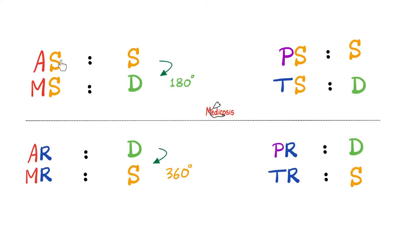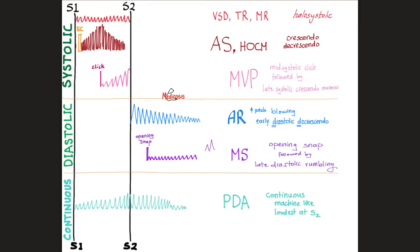The murmur of aortic stenosis is systolic, so if you change stenosis into regurgitation, you flip systole into diastole. Since aortic regurgitation is a diastolic murmur, and since the pulmonic valve is equivalent to the aortic valve — both are semilunar valves — pulmonic regurg is diastolic as well. Both aortic regurg and pulmonic regurg are diastolic decrescendo murmurs.